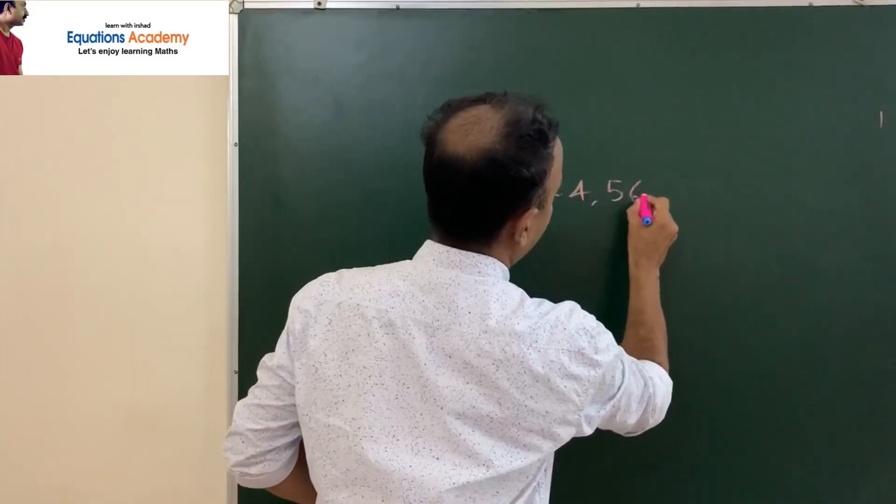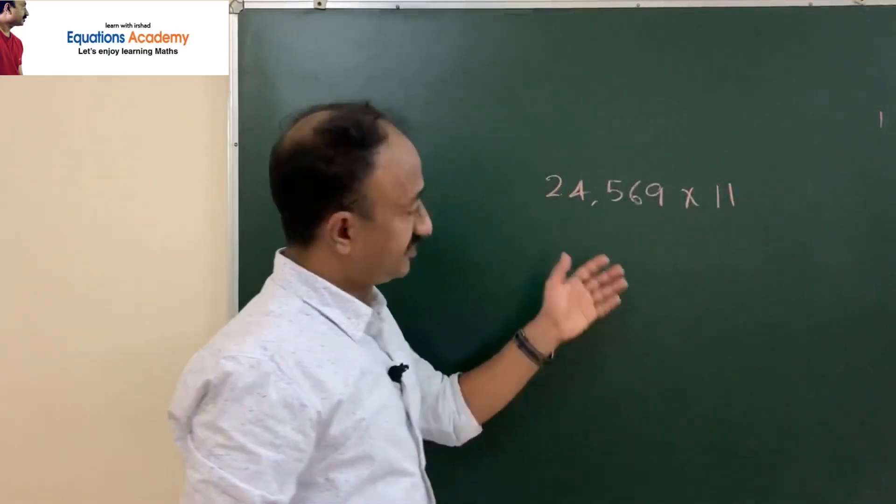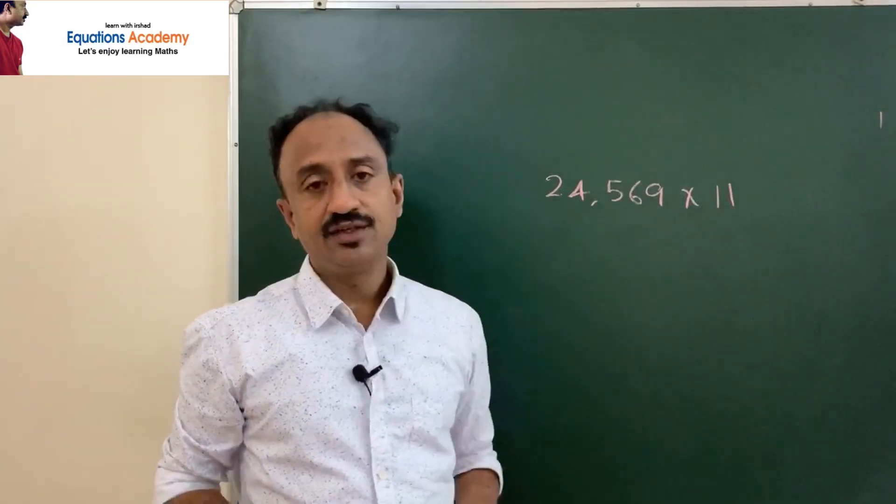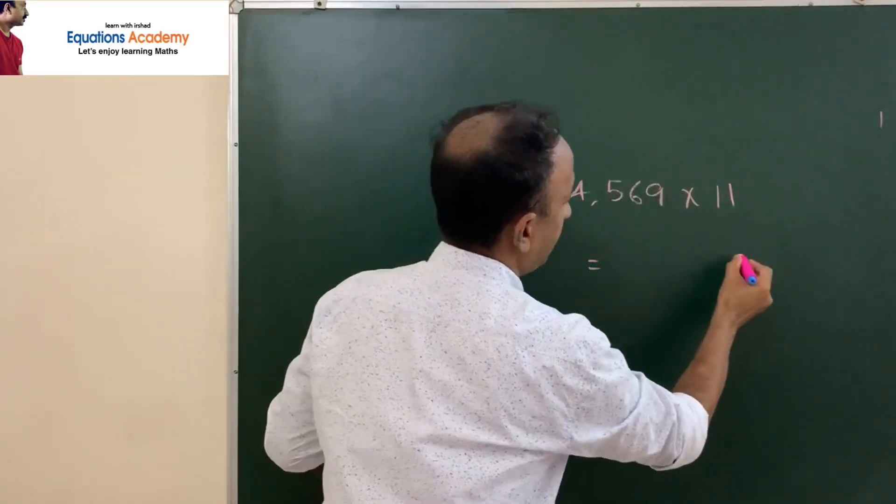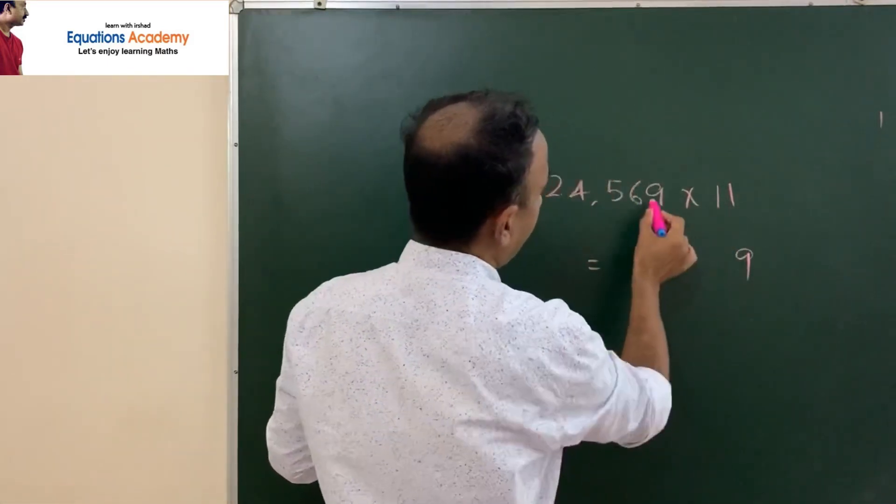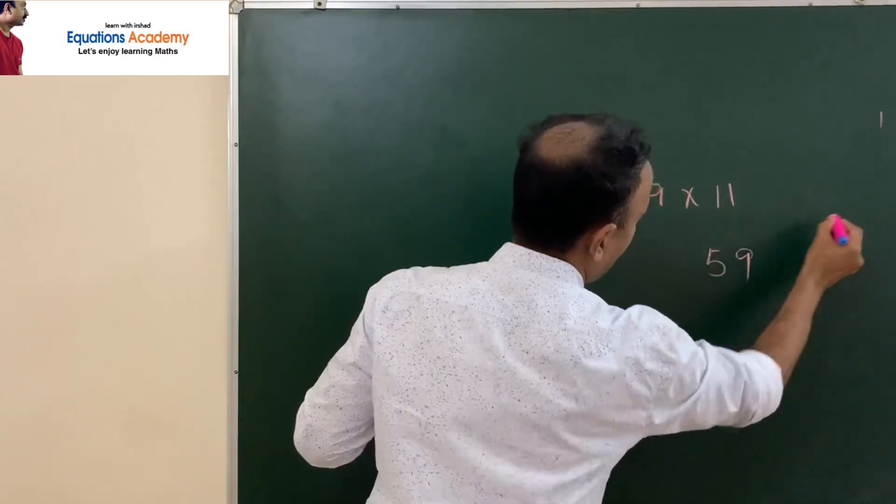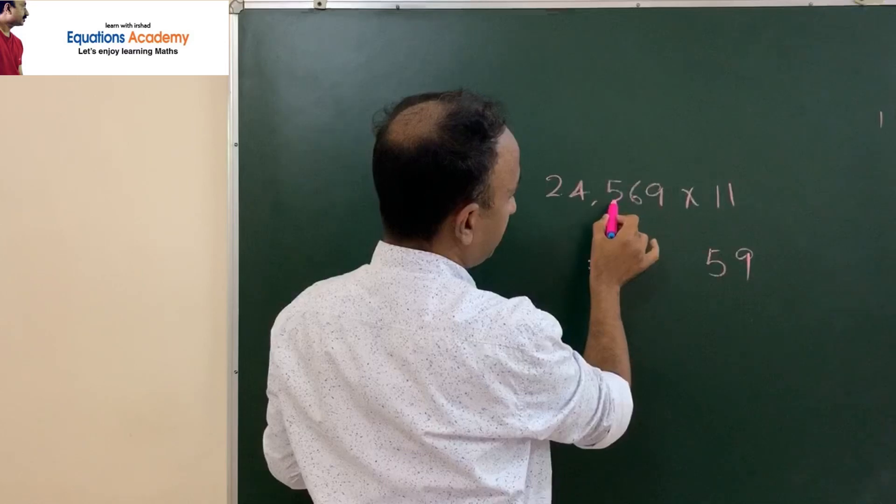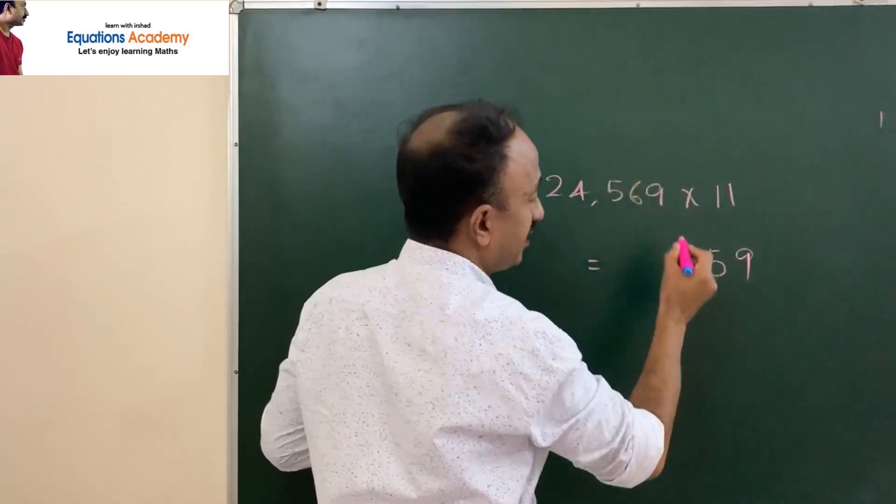24,569 multiplied by 11. This is a 5-digit number. What is the first step? Keep this 9 as it is. 9 plus 6 is 15. We put 5 there, 1 carry forward. Then 6 plus 5 is 11, plus carry forward 1. 11 plus 1 is 12. We put 2 there, again 1 carry forward.